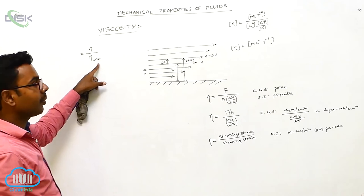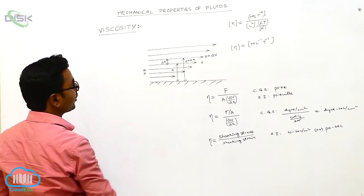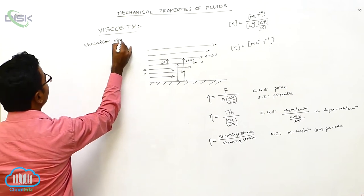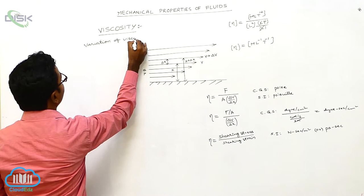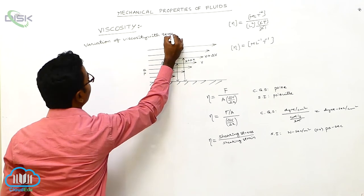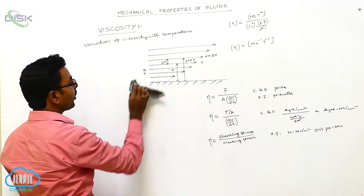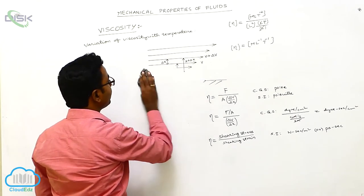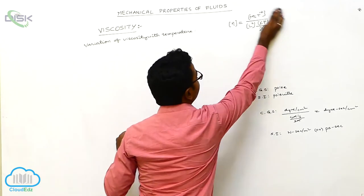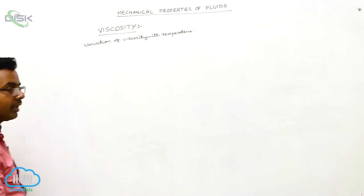We discussed relative viscosity. Now we discuss the variation of viscosity with temperature. The variation of viscosity with temperature is different for liquids and gases.